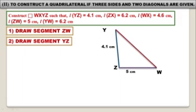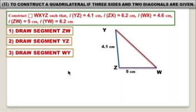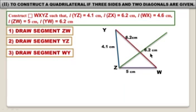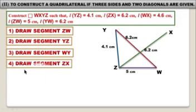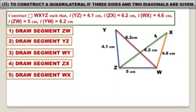The length of YW is equal to 6.2 centimeters as given. Take the length between the two edges of the compass equal to 6.2 centimeters and mark the arc. Because the length of ZX is equal to 6.2 centimeters as given, mark the arc and draw the segment ZX. Then draw the segment WX.